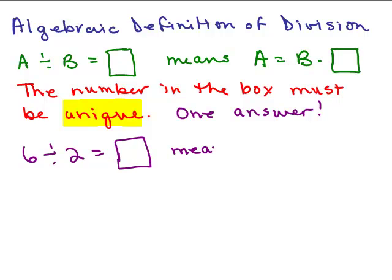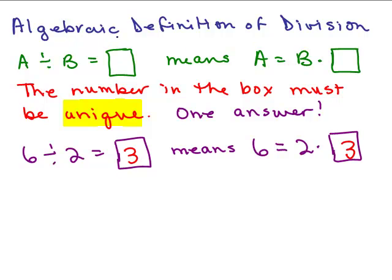Let's look at an example: what's six divided by two? It would have to make this equation true. Two times what will equal six? Three. So that's why six divided by two is three. You could have fractions, negative numbers, all sorts of different things, but the main point is that this is the algebraic way of thinking about division — you can think of the answer to a division problem by thinking about a different multiplication problem.